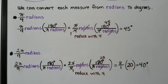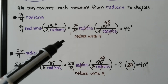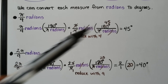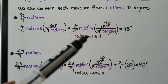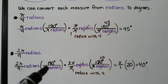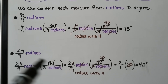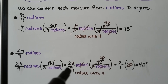Now let's convert each measure from radians to degrees. For π/4 radians, we multiply by (180° / π radians). We reduce with 4 — that becomes 1, that becomes 45. The π cancels out, the radians cancels out, and we're left with 45/1, or 45 degrees. For 2π/9 radians, we multiply by (180° / π radians). The π cancels, the radians cancels, we reduce with 9 to get 20, and we end up with 2 × 20 = 40 degrees.